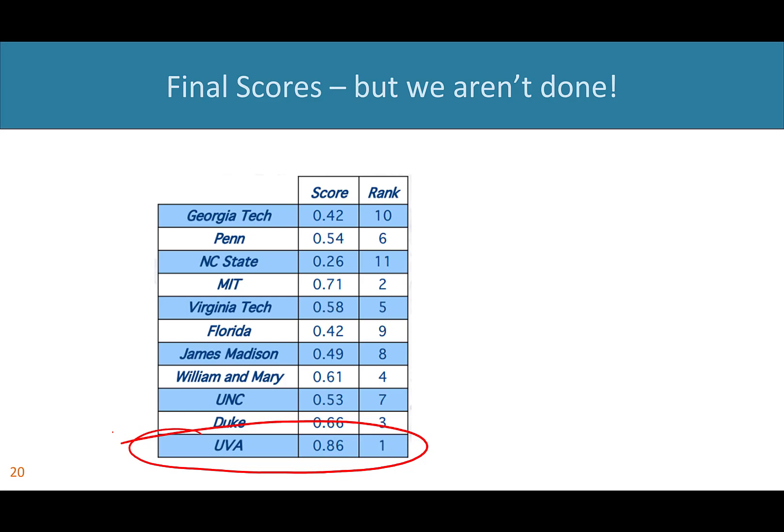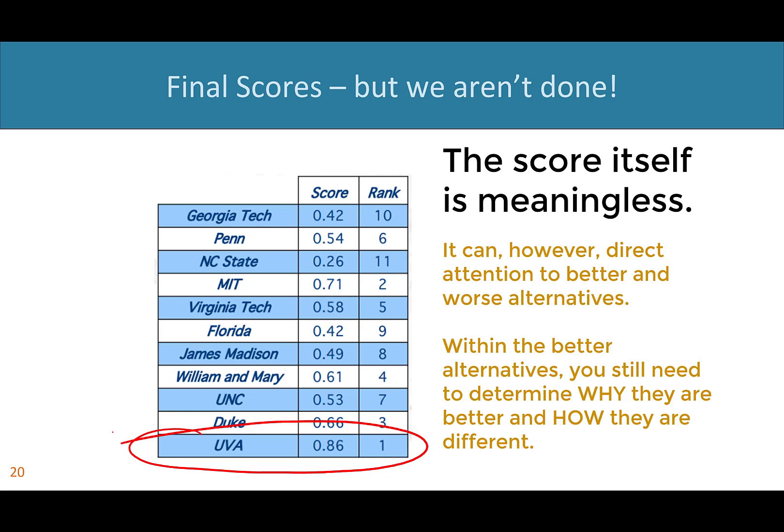For the given preferences of this decision maker and the dated data we have, clearly UVA is the best choice. But we're not done. This score of 0.86 is 0.15 better than MIT, which is second place. What does that mean? Remember, these scores are dimensionless and essentially meaningless to any person reviewing them on their own. That said, even though the score itself may be meaningless, we went to all this work for good reason — there's a lot of value in examining the top alternatives to understand why they rank highly and how they differ.